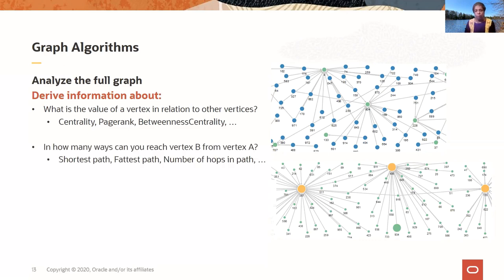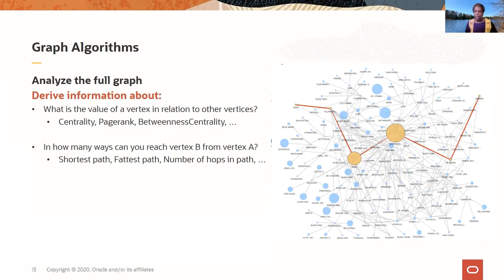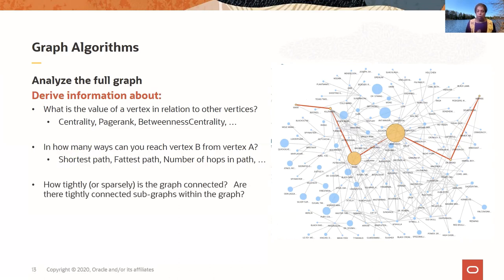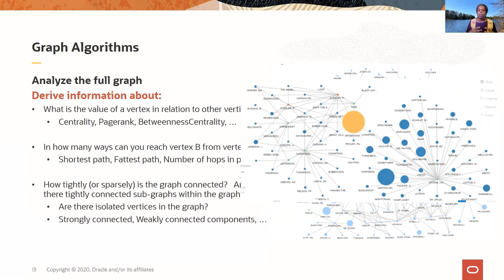Another class of algorithms is finding paths in your graph — is there a path between two vertices? What is the shortest path? What is the fattest path, where you have some value associated with each edge and you take the number of edges, multiply by those values, and say this is the capacity on this path? Also, how tightly or how sparsely is a graph connected? A strongly connected graph means every node is connected to every other node. Or it might be more sparsely connected — with some isolated vertices that are not connected to anything else. These properties tell you a lot about your data when you view it as a graph.